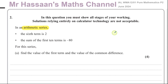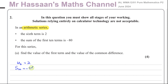We're told that the sixth term is 2 and the sum of the first 10 terms is negative 80. For this series, we need to find the value of the first term and the value of the common difference. So U6 equals 2, and S10 equals negative 80.